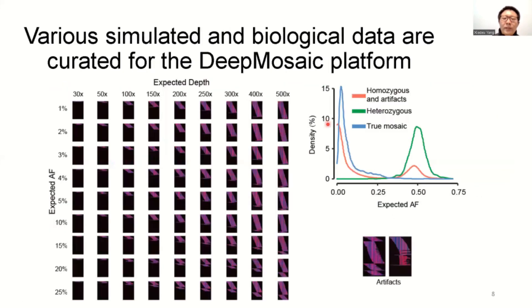After the image representation, variants with different sequencing depths and fractions of the mutant alleles can be represented like this. We can also see their distributions are similar to what we found in real data, and those technical artifacts are performing bizarrely at the corners.